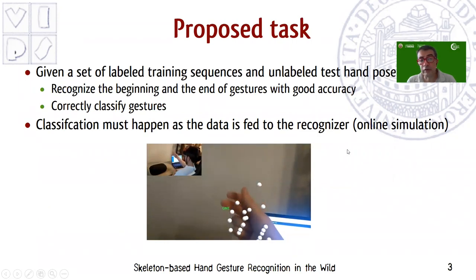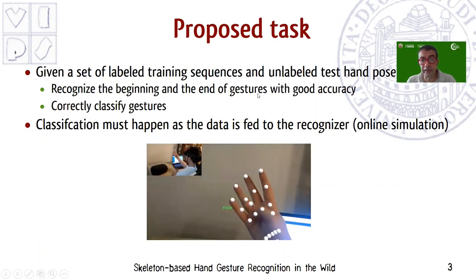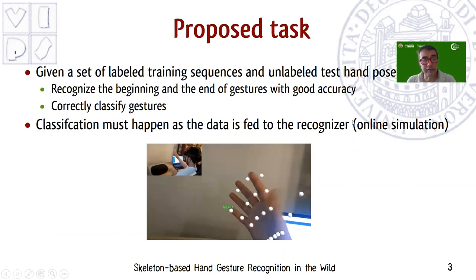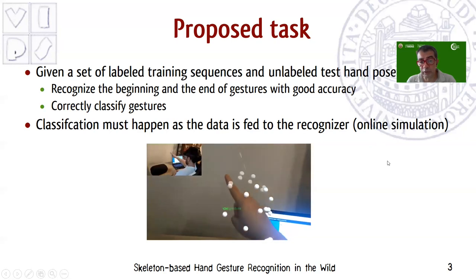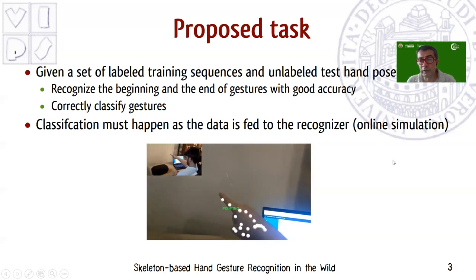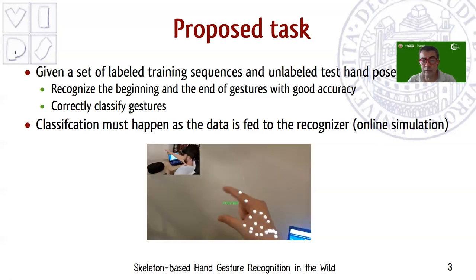Given a set of labelled training sequences and unlabeled test hand pose sequences, recognize the beginning and end of gestures with good accuracy, correctly classifying the gestures, and doing this in an online simulation in order to possibly use the methods to build online recognizers like the one shown in this video.